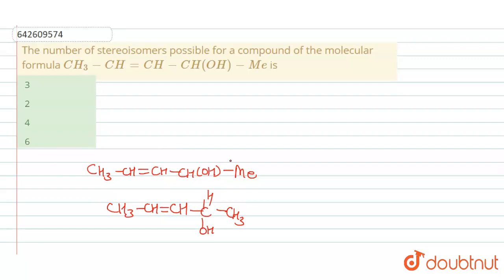For the calculation of the number of stereo isomers, we have to find out the number of stereo centers. According to that, we will find the number of stereo isomers. For stereo centers, we have two options: first, we find which one shows GI — meaning geometrical isomerism — and second, which one is a chiral center.